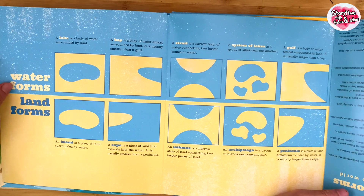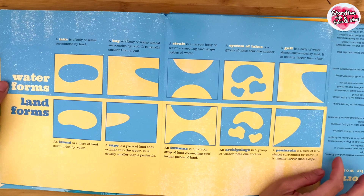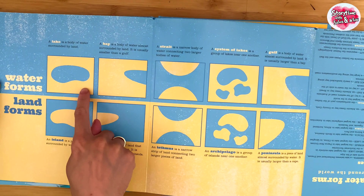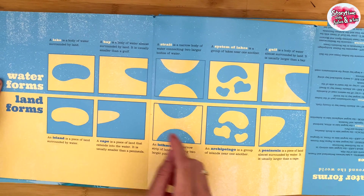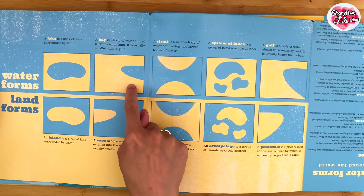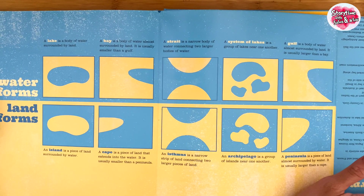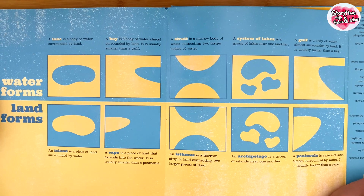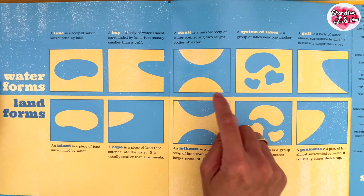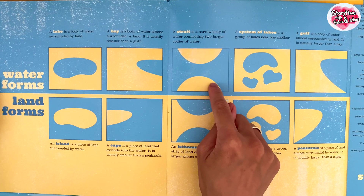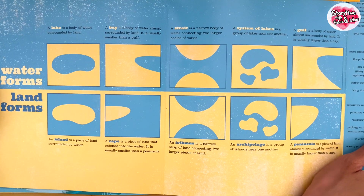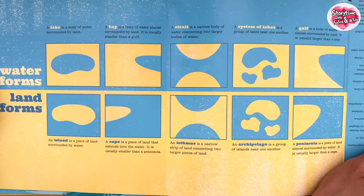Water Forms. A lake is a body of water surrounded by land. A bay is a body of water almost surrounded by land. It is usually smaller than a gulf. A strait is a narrow body of water connecting two larger bodies of water.